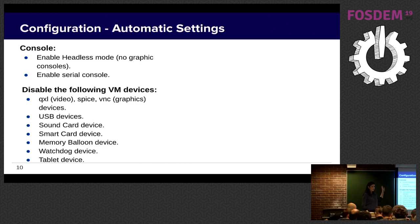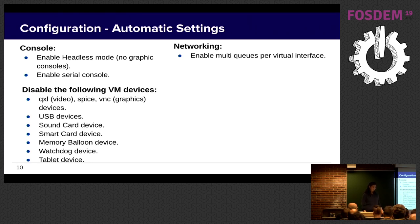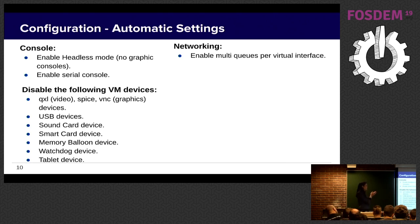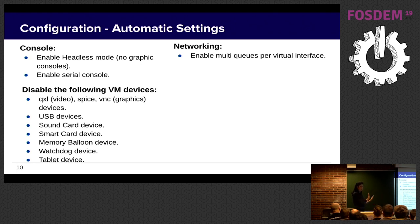Regarding VM devices, there is a list of devices that will be disabled automatically by default — no USB, etc. Regarding networking, we enable multi-queues per virtual interface, meaning multiple networking requests will be handled in parallel with multiple queues. Keep in mind that each queue is managed by a virtual thread — so if you have heavy networking load, stay with the recommended settings. But if you don't have much networking load and need more processing capacity, you can disable it.